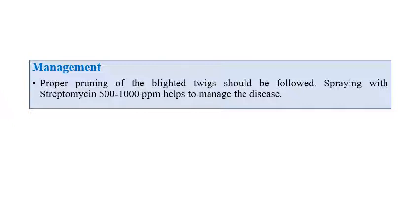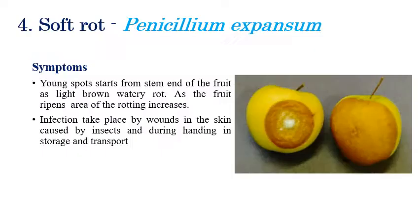For management of fire blight, proper pruning of blighted twigs is recommended, along with spraying of streptomycin at the rate of 500 to 1000 ppm, which can greatly help to manage this disease.